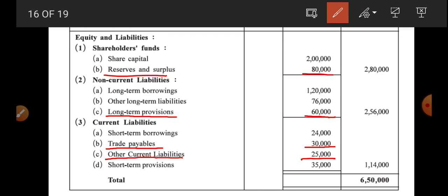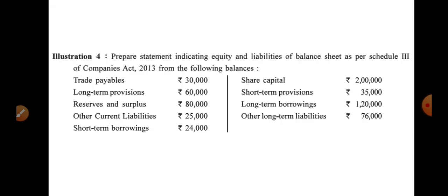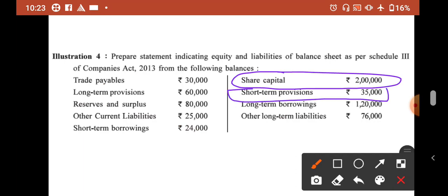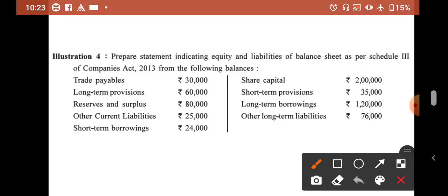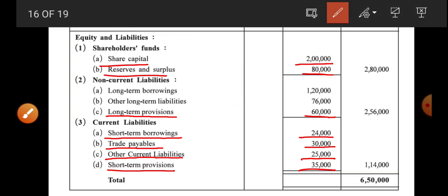After that, we have other current liability and short term borrowings. So other current liabilities and short term borrowings — hopefully it makes sense to you. Share capital 2 lakh, short term provision 35,000 — so share capital 2 lakh and short term provision 35,000. Then long term borrowings 1 lakh 20,000 — so long term borrowings 1 lakh 20,000.